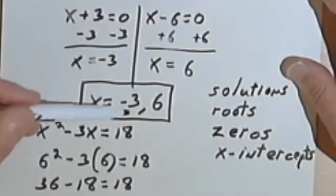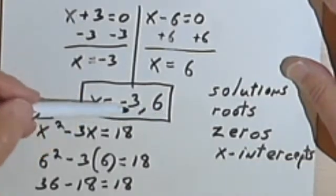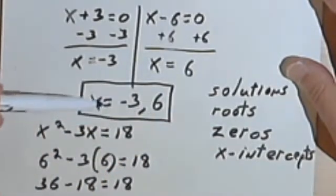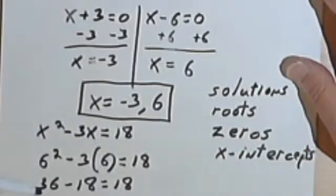The way to check it will be to take each of those solutions, or roots, or zeros, or x-intercepts, whatever you want to call them, take each of those and plug them back into the original equation. If the equation balances, then the answers are correct.